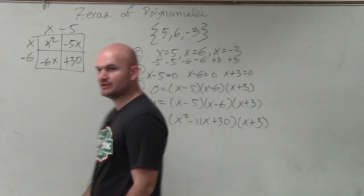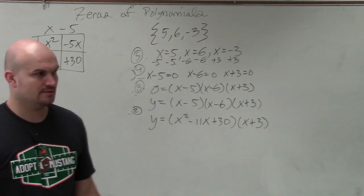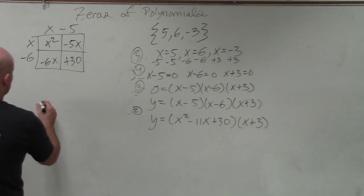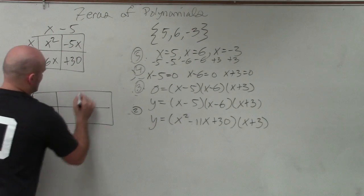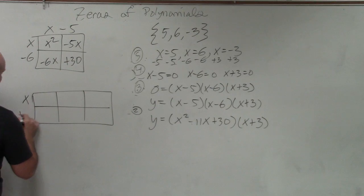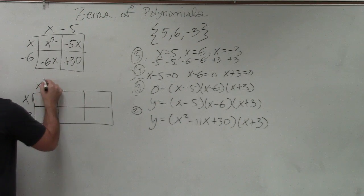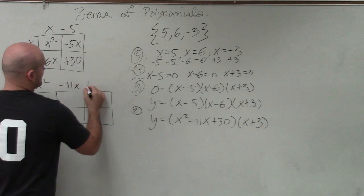Does everybody see how I did that? Yes, no? Then I just do another box. Now I make this one a little bit longer. So I still do x plus 3 over here. And now I just do x squared minus 11x plus 30.